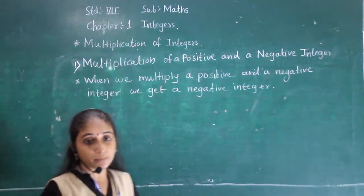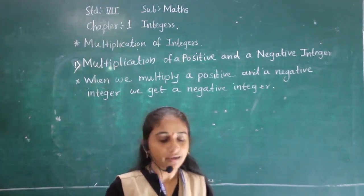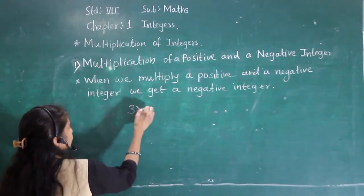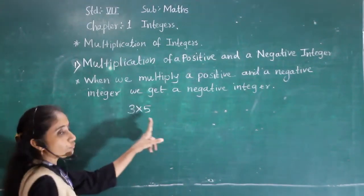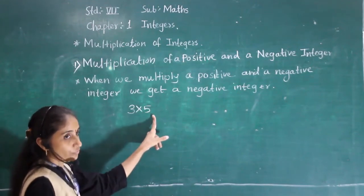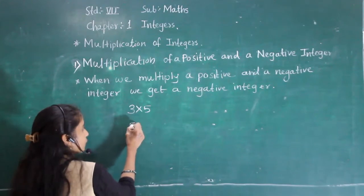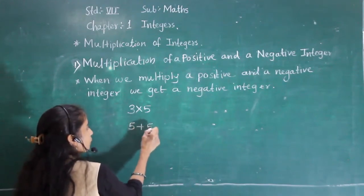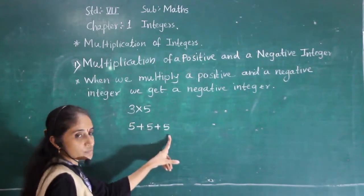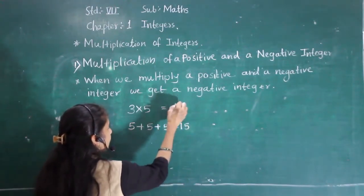Now we have to learn multiplication of whole numbers. Multiplication is the repeated addition. Suppose 3 into 5 — we have to write it in the form of addition: 3 times 5 means 5 plus 5 plus 5, which is equal to 15. So 3 fives are 15.